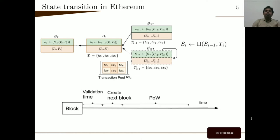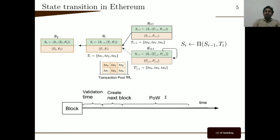After block creation, the node will start Proof of Work (POW), also called mining, on the created block. Mining is basically a heavy computation to solve a cryptographic puzzle. While the node is doing POW on the created block, it either gets the solution to the puzzle or it receives a block from another node in the network, after which it discards its own block and starts validating the received block. From all this we can see that block validation, block creation, and POW is a sequential process.